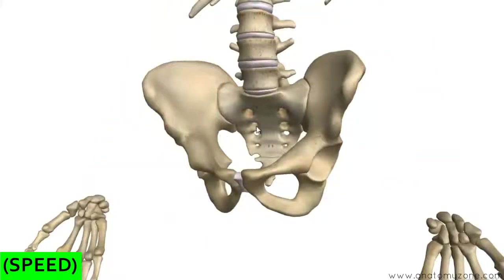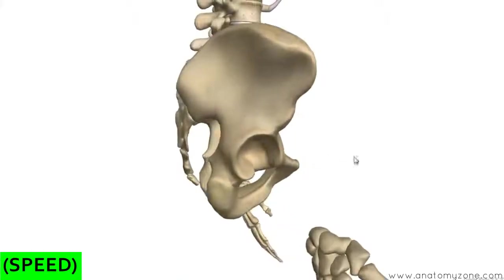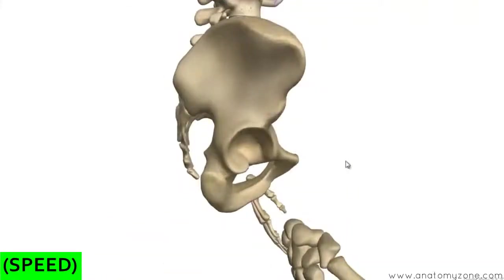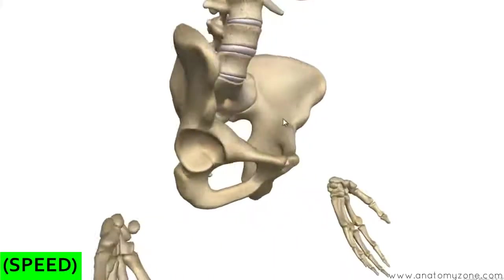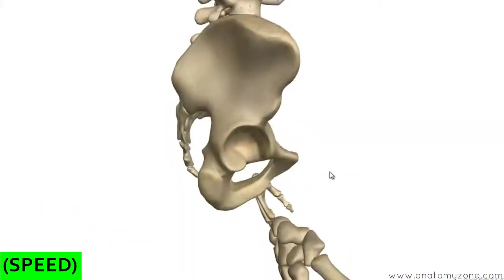Another quick thing to mention is the angle of the pelvis. The angle of the pelvic inlet — this brim or rim — is actually about 50 to 60 degrees to a horizontal line. At this angle, the pubic tubercle and the anterior superior iliac spine are in the same vertical plane.